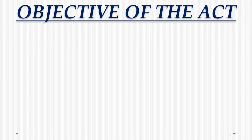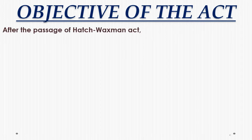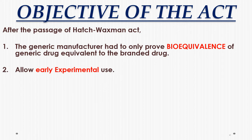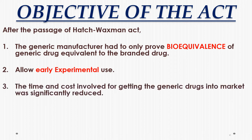Objectives of the Act. After the passage of the Hatch Waxman Act: First, the generic manufacturer had to only prove bioequivalence of the generic drug equivalent to the branded drug. Bioequivalence means the rate and extent to which an active ingredient is absorbed and becomes available at the site of action. Second, it allowed early experimental use — before the Hatch Waxman Act, if a drug was covered by a patent, testing could not begin until the patent expired. Third, the time and cost involved in getting generic drugs to market was significantly reduced.